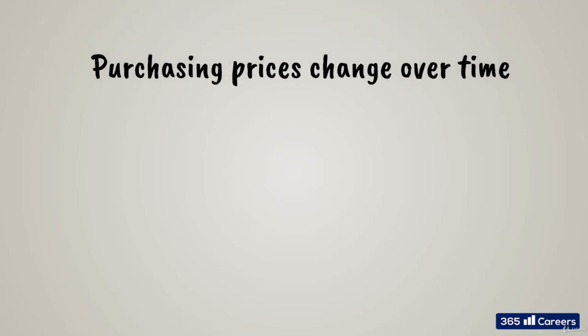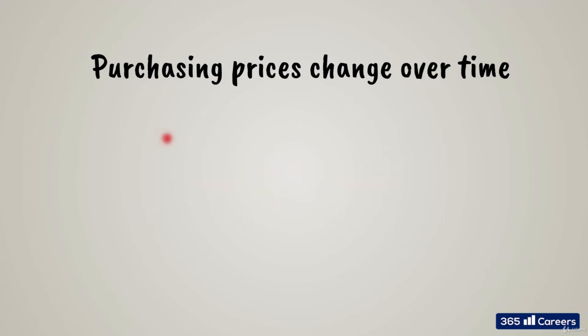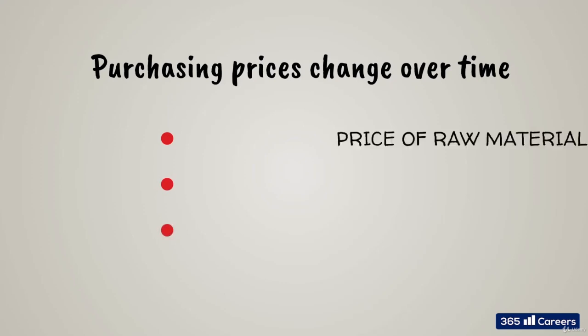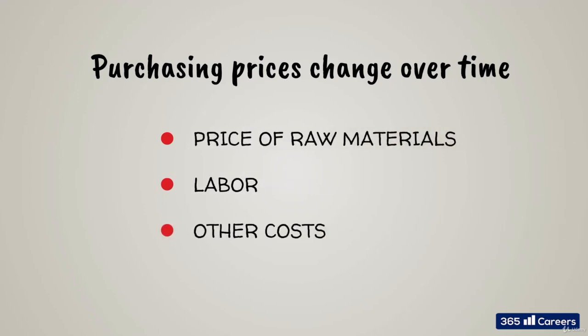If purchasing prices stayed constant all the time, the calculation of COGS and inventory would have been much simpler. But unfortunately, that's not how things work in reality. Prices of raw materials, labor, and other costs change all the time. So that's a topic to be addressed when we calculate COGS and inventory.